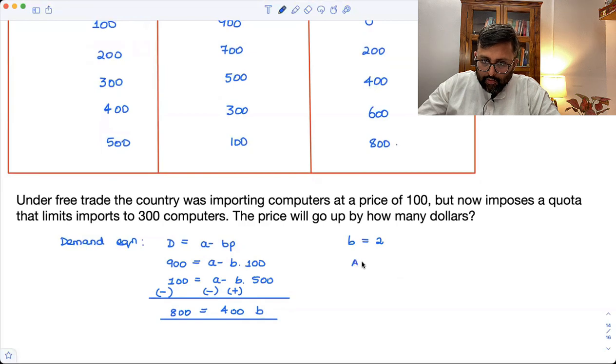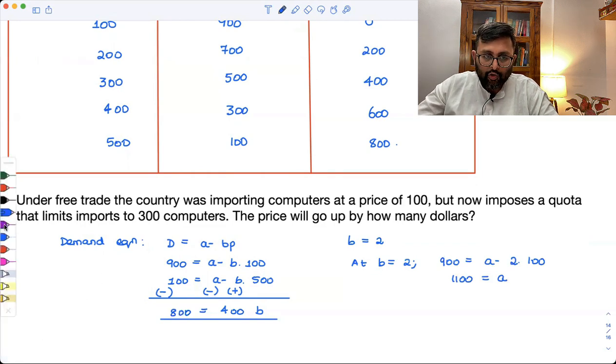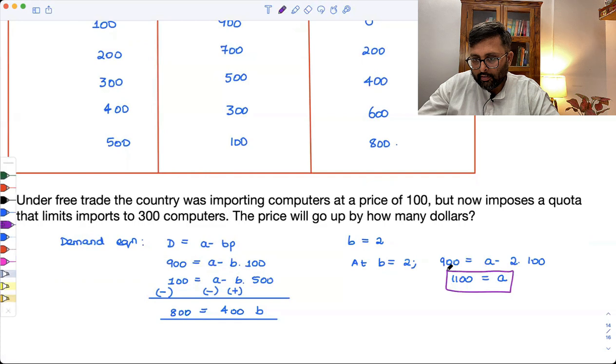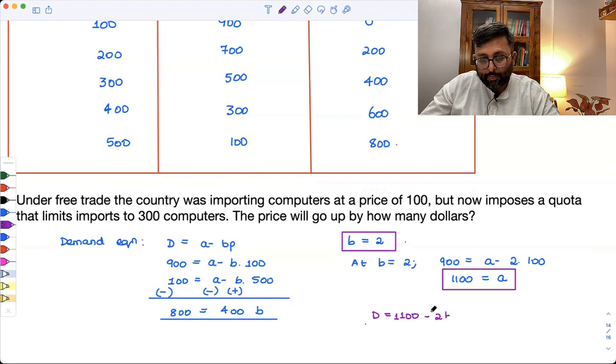Now, at B equals to 2, I can put this in the first equation. That is 900 is equal to A minus, in place of B, I can write 200. So it is 900 equals to A minus 200. So it is 900 plus 200, which is 1100, is equal to A. So what I have got is that I have got A as 1100 and B as 2. So my equation is 1100 minus 2P. This is what my demand equation is.